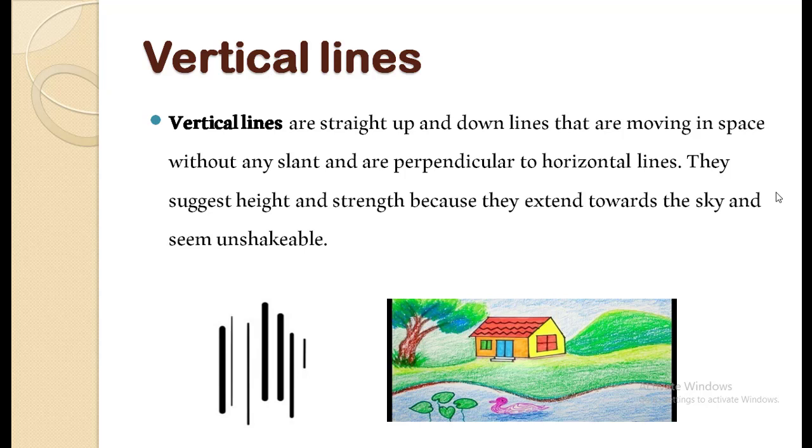Come to the first vertical lines. Vertical lines are straight up and down lines that are moving in space without any slant and are perpendicular to horizontal lines. They suggest height and strength because they extend towards the sky and seem unshakable. Students, aap left corner mein deekh sakte hai. Lines up and down direction mein banhi hoi hai. You can see the drawing as well. Vertical line ki help se drawing itni koopsoorat banhi hoi hai.